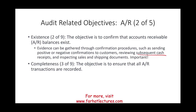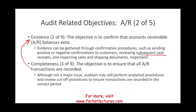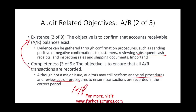Completeness: the objective is to ensure that all account receivable transactions are recorded. Completeness is not as important as existence for account receivable, because companies inherently want to track what's owed to them. However, companies may still perform analytical procedures and review cutoff procedures to ensure that account receivable recorded in period two actually belongs in period two, not period one. Completeness will be more important when we look at accounts payable.